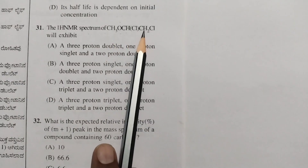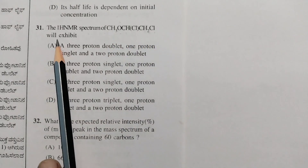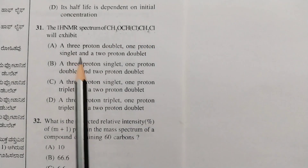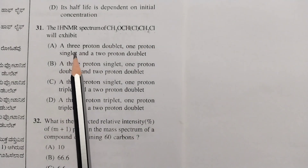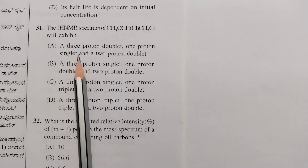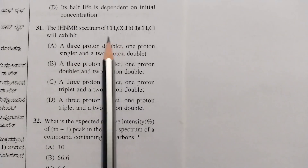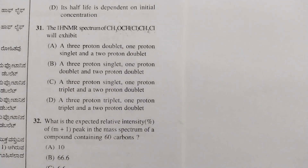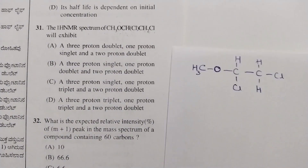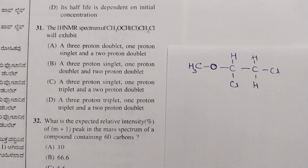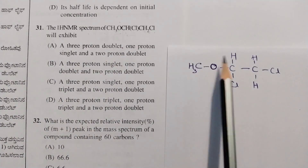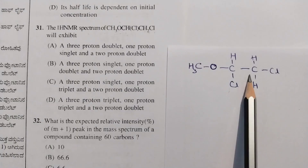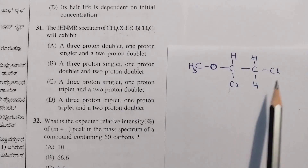The first question is: the proton NMR spectrum of CH₃O-CHCl-CH₂Cl will exhibit which splitting patterns? First, we will write the detailed structure of this compound: CH₃O-CHCl-CH₂Cl.